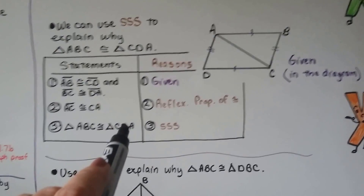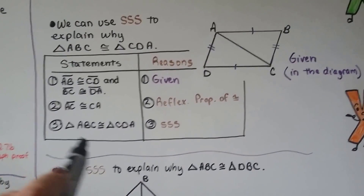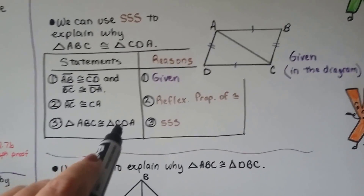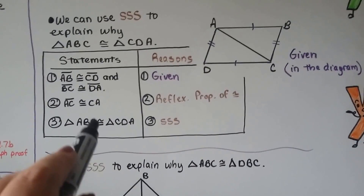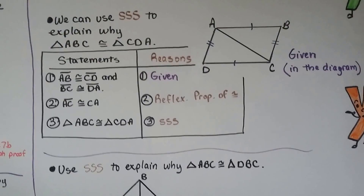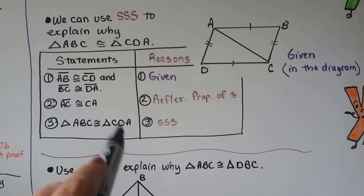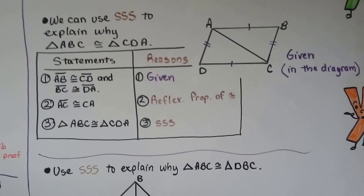That brings us to step 3: triangle ABC is congruent to triangle CDA because of SSS. It's written in this order because A is corresponding to C, B is corresponding to D, and C is corresponding to A.